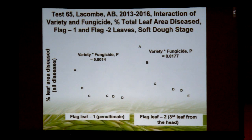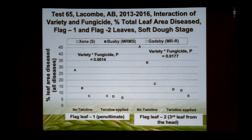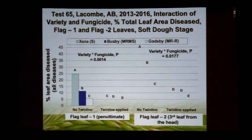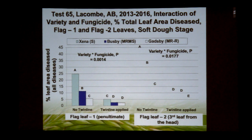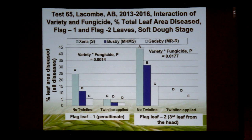We also saw an interaction looking at total leaf disease — scald wasn't the only thing, as we also had some net blotch, spot blotch and other diseases developing. Looking at the flag leaf minus one (the penultimate leaf), a very similar picture: the genetics in Busbee and Gatsby provided a significant level of control, and where we applied Twinline we saw a reduction in disease especially with the susceptible variety. Very similar picture at the third leaf from the head — the flag leaf minus two.